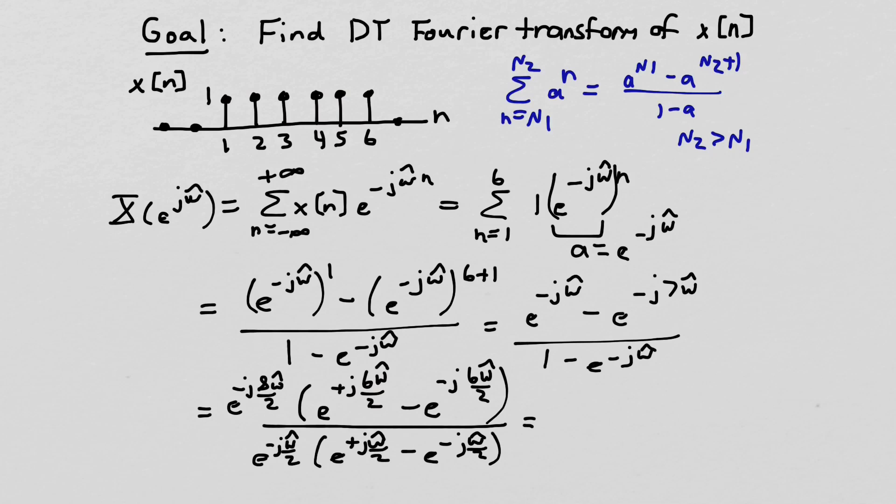Okay, so if I've done that, now I can hopefully recognize that the top here looks basically like in the same form as sine. I'd have to divide by 2j. The bottom looks in the same form as sine, but I'd have to multiply by 2j. So the 2j effectively cancel out, and I can rewrite this as sine of 3 omega hat, that's 6 omega hat over 2, over sine of omega hat over 2, and what do I have if I combine these two terms together? I bring this up here so it has a positive sign, so I'm left with e^(-j7ω̂/2).